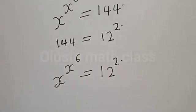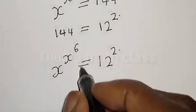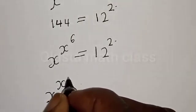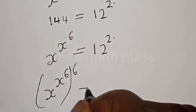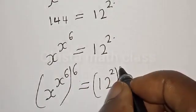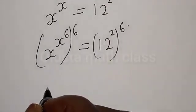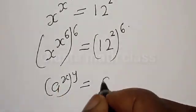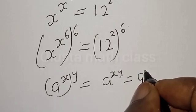Now let's multiply both sides by the power of 6. We have s raised to power s raised to power 6, multiplied by 6, is equal to 12 squared multiplied by the power of 6. Remember, if you have a raised to power x raised to power y, that is the same as a raised to power x·y, which equals a raised to power y raised to power x.